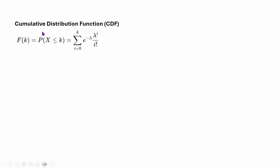The CDF, or cumulative distribution function, is straightforward for Poisson distribution since it is a discrete distribution. If someone asks for the probability of having less than or equal to k subscribers per day, you simply add up all the cases: 0 subscriptions, 1 subscription, 2 subscriptions, up until k subscriptions per day. And that's it.